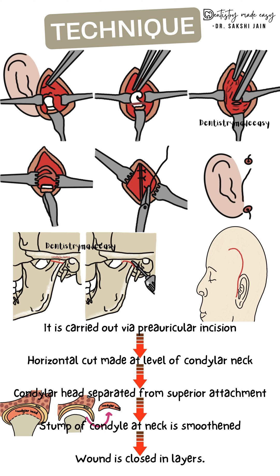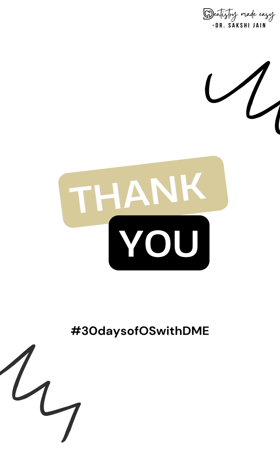The complications associated with this technique are as follows. In unilateral condylectomy (only on one side), there is a tendency for deviation of the mandible towards the same side on opening. In bilateral condylectomy, an anterior open bite is seen as a result of loss of height in the vertical rami.